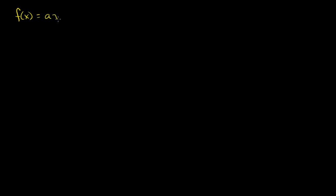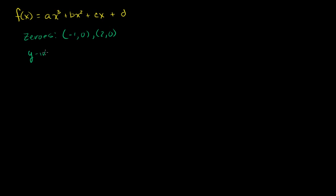They give us a function f of x. They say it's a third degree polynomial of the form ax cubed plus bx squared plus cx plus d. They tell us a couple of the zeros of this polynomial — zeros at the points (-1, 0) and (2, 0). And they tell us that we have a y-intercept at the point (0, -2). What they ask us is: what is a plus b plus c plus d?